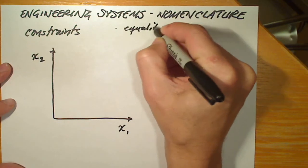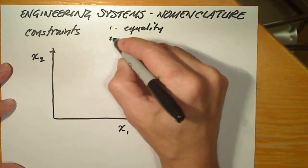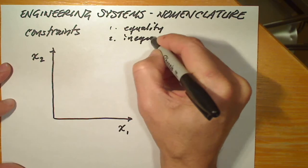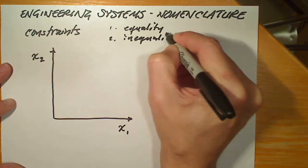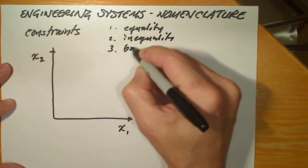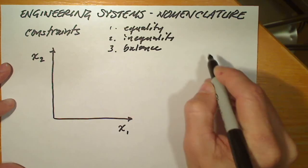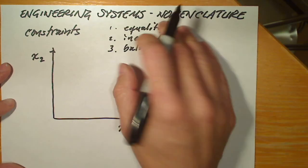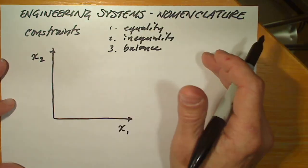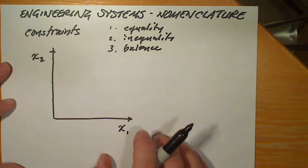Equality constraints, inequality constraints, and balance constraints, which could also be inequality or equality constraints. I'm going to show you what those look like.